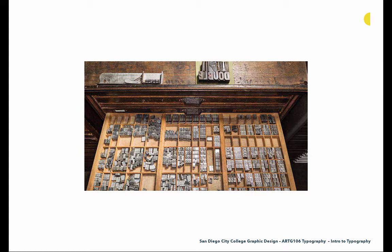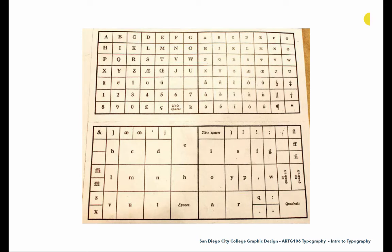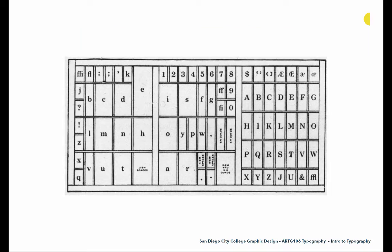Historically we had an upper and lower case, and that's really where that terminology comes from. The drawer layout shows uppercase on the top left, small caps on the right, and punctuation and all of the lowercase at the bottom. You can see that E's have more compartments than V's or Z's, reflecting the frequency of use in English. Eventually the California job case combined upper and lowercase into one drawer, which was particularly useful.